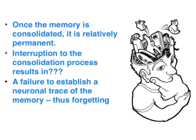We might not be able to access that memory later due to retrieval failure — for instance, because of the absence of the right cue. If there is an interruption to the consolidation process, that neural or memory trace will never set, and the memory will be forgotten — it will never actually be established in our long-term memory.